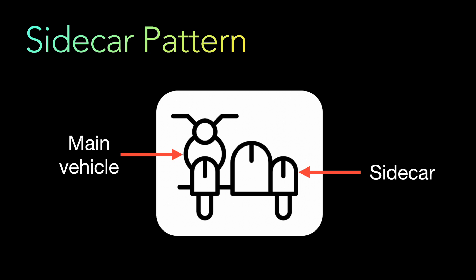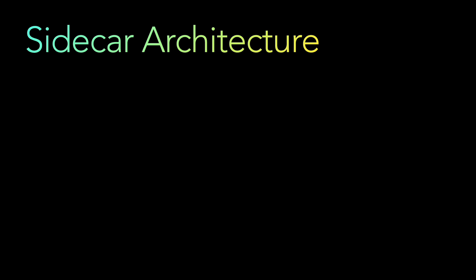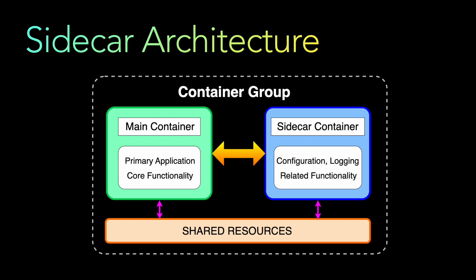This modular responsibility helps us to build the vehicle in a modular fashion. The main concerns are on the main vehicle, and the peripheral concerns — like carrying the person — are on the sidecar. Now let's look at the sidecar architecture.